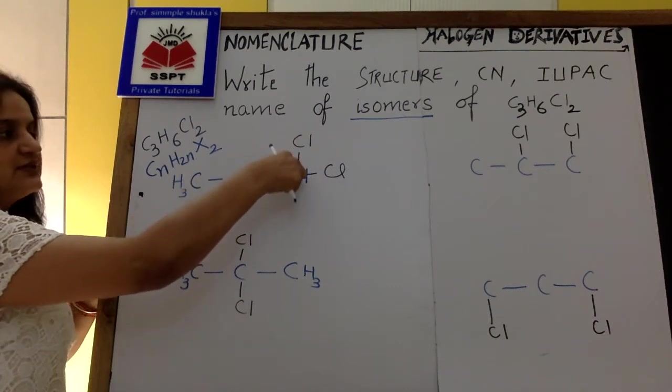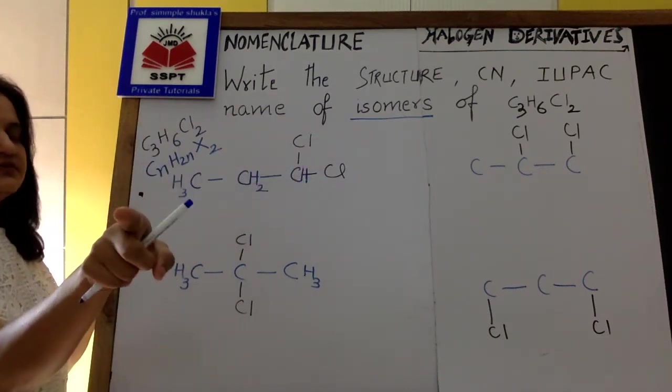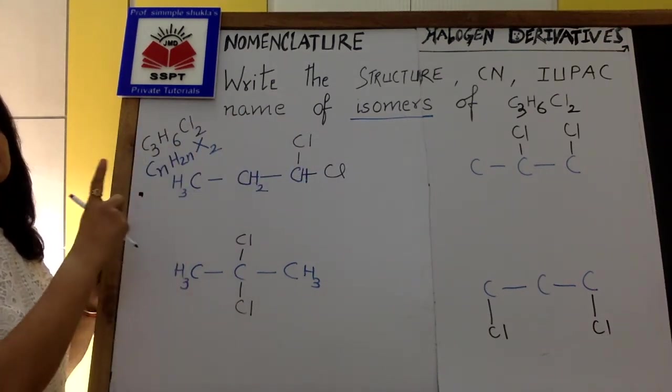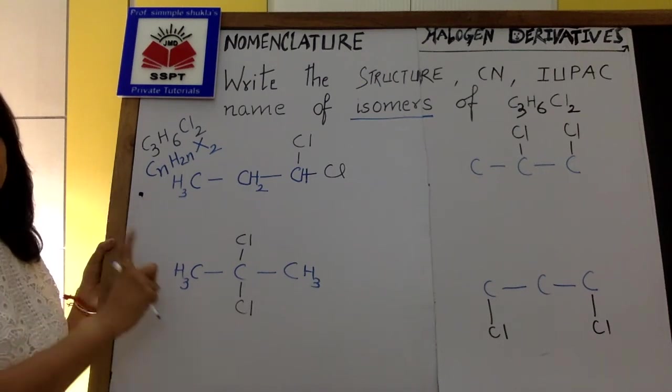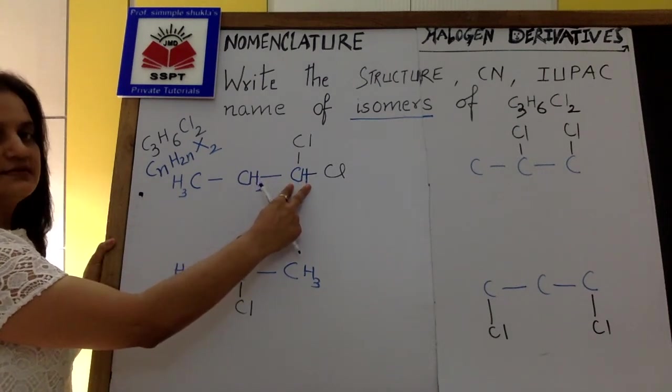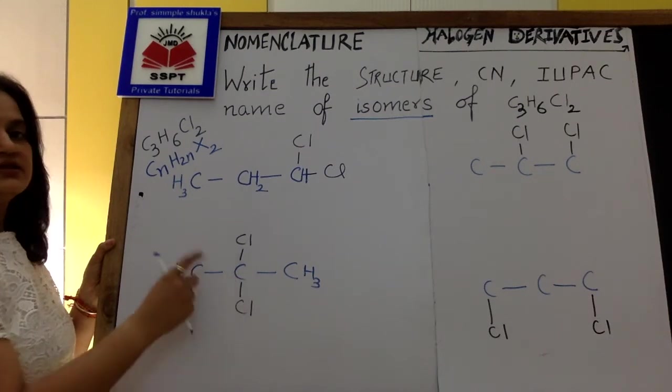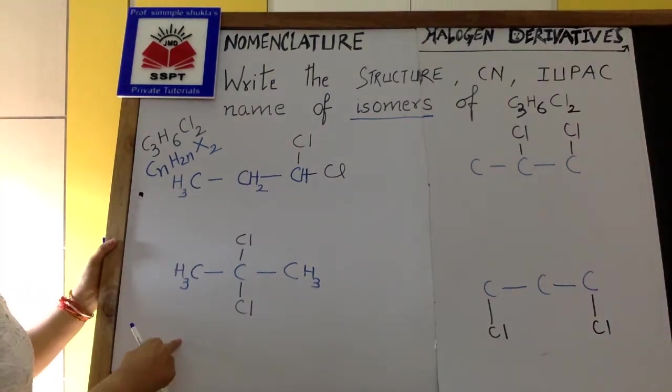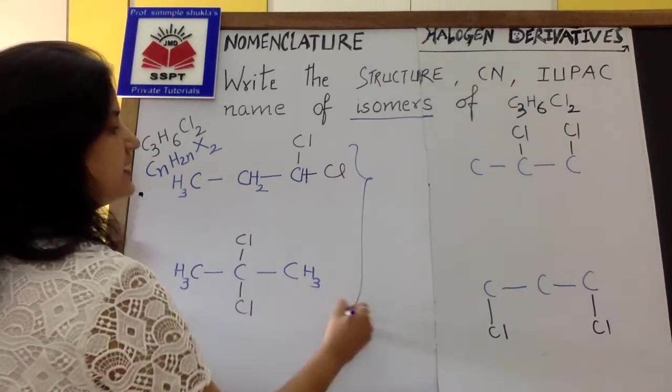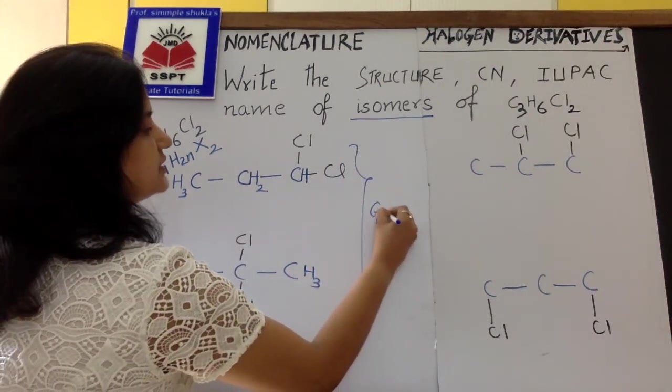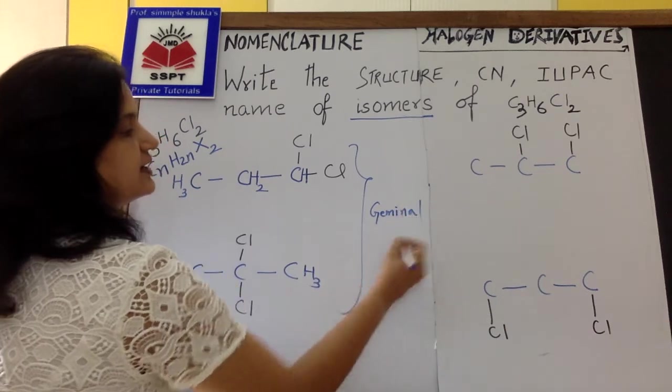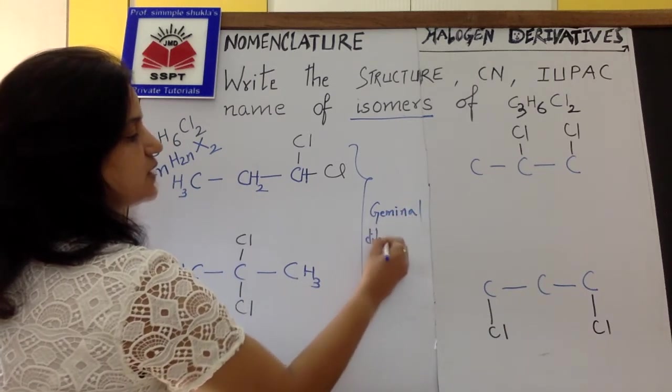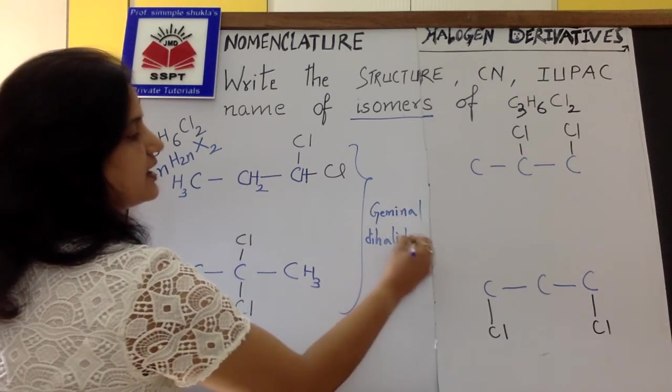Two halogens on the same carbon we did in the classification. This is a dihalogen derivative of alkane which is geminal. Two halogens on the same carbon. Again, it is a geminal dihalide. So these two are the geminal dihalide. I am just writing here, these two are geminal dihalide.